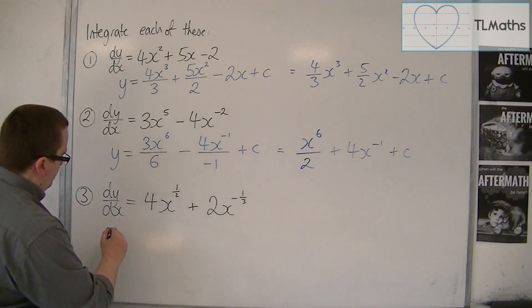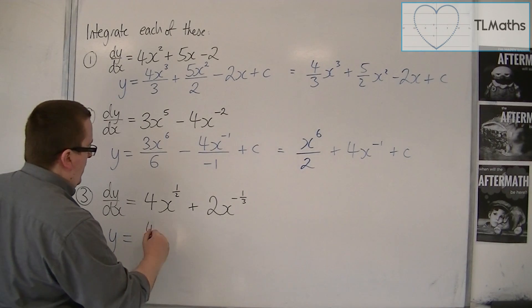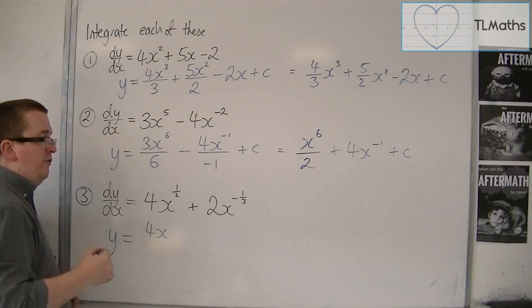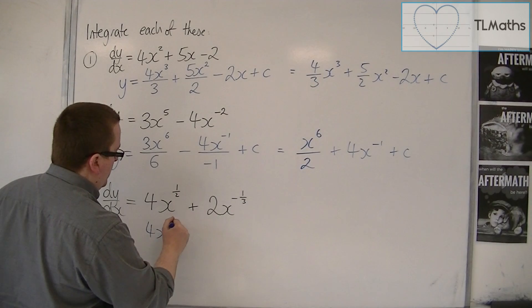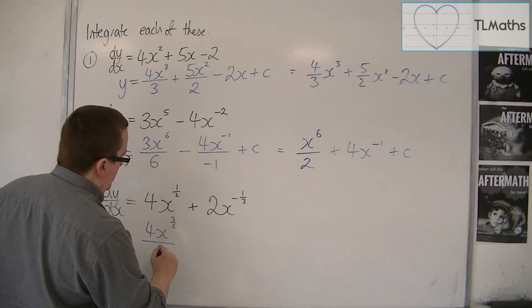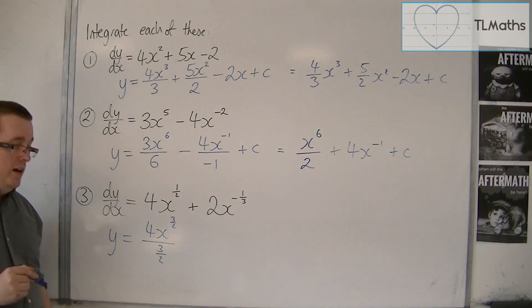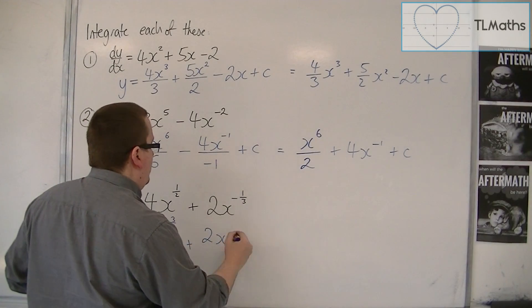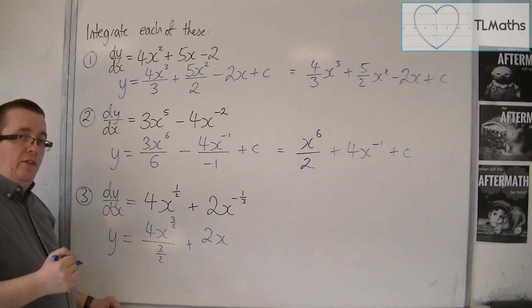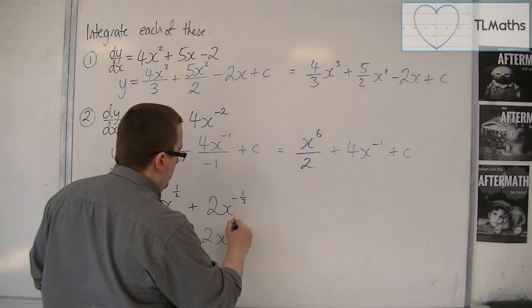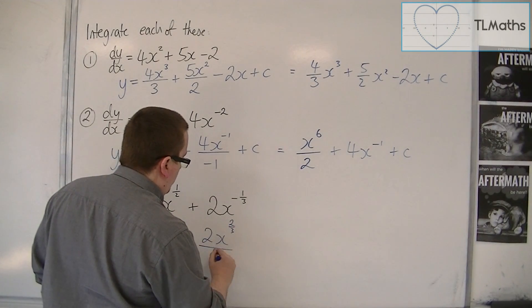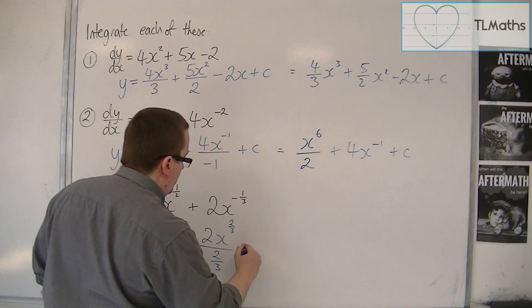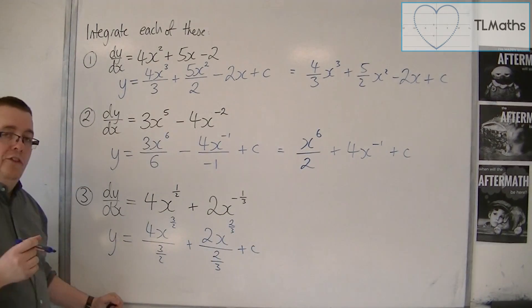Let's have a look at the third one. Add 1 to the power. So 1 half plus 1 is 3 halves, and then you're dividing by the new power, so divide by 3 halves. Then here we've got plus 2x. Now add 1 to minus 1 third, you get 2 thirds, and then divide by the new power. And then we've got this plus c constant of integration.